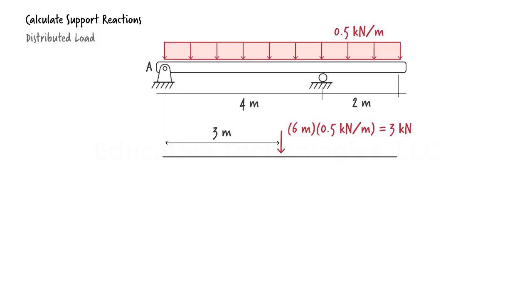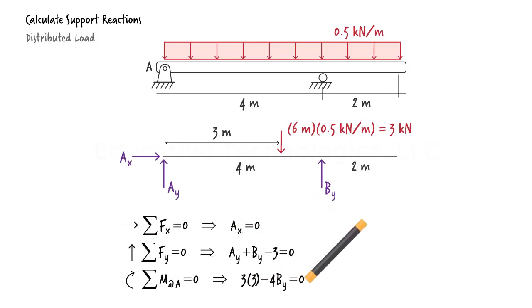Again, we have three support reactions here, two reactions at A and one reaction at B. Here are the three equilibrium equations. Solving the third equation for By, we get, then the second equation gives us Ay. And we know Ax is zero from the first equation. Here are the results.